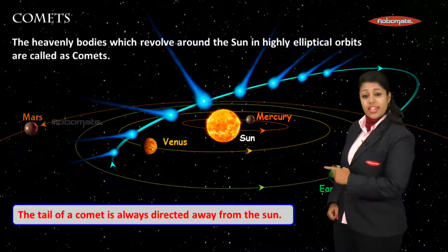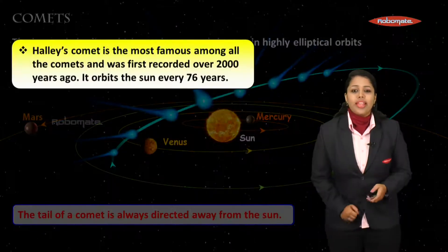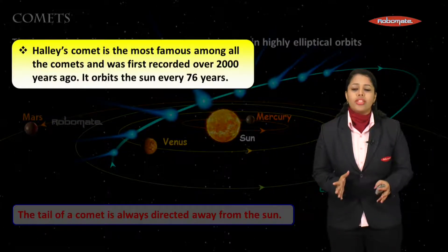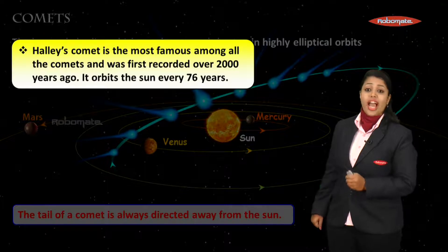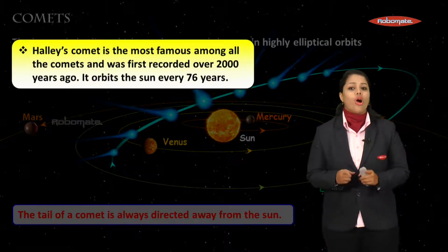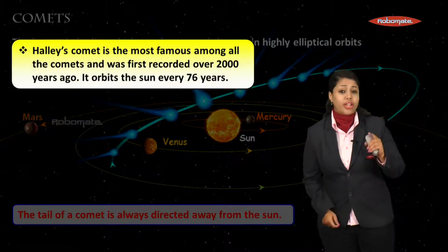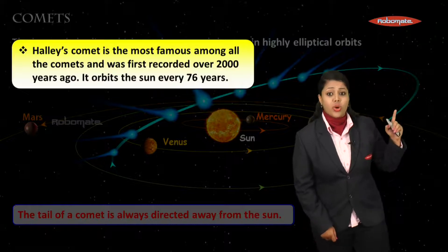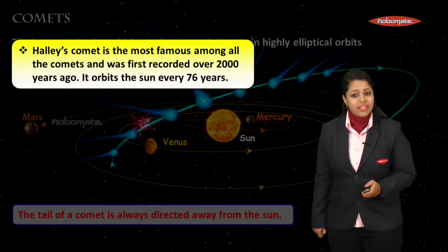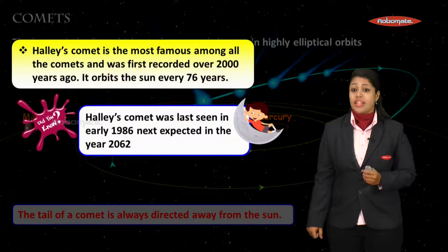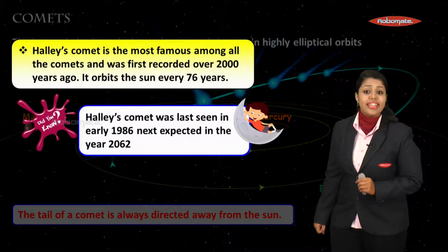One important thing to remember: the tail of the comet is always directed away from the Sun — the tail always points opposite to the Sun. The most famous comet is Halley's Comet, which was first recorded over 2,000 years ago and orbits the Sun every 76 years.